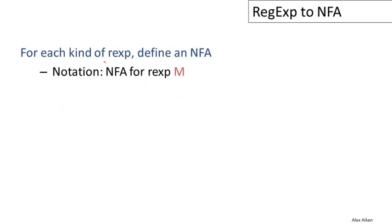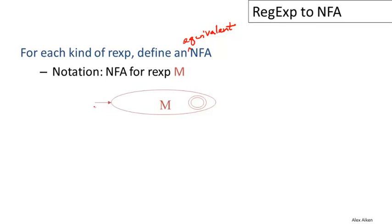The plan is that for each kind of regular expression, we're going to define an equivalent non-deterministic automaton that accepts exactly the same language as that regular expression. Here's the notation we're going to use: we'll define these automata for regular expressions, and usually what we're going to be doing is modifying their start states and their final states. We'll indicate the start state with an arrow and the final state with a double circle. In the machines we build here, there will be only one final state.